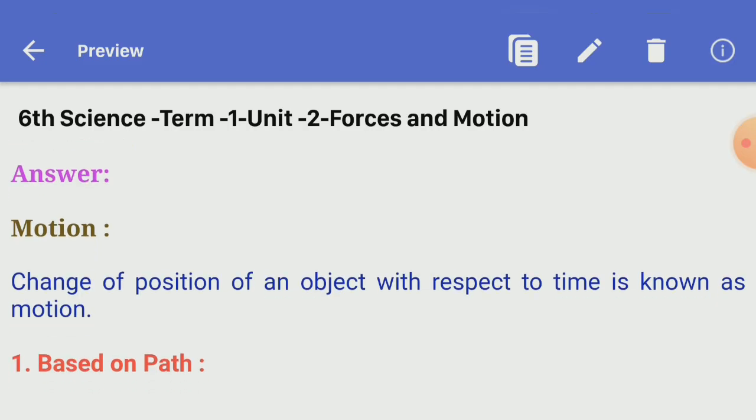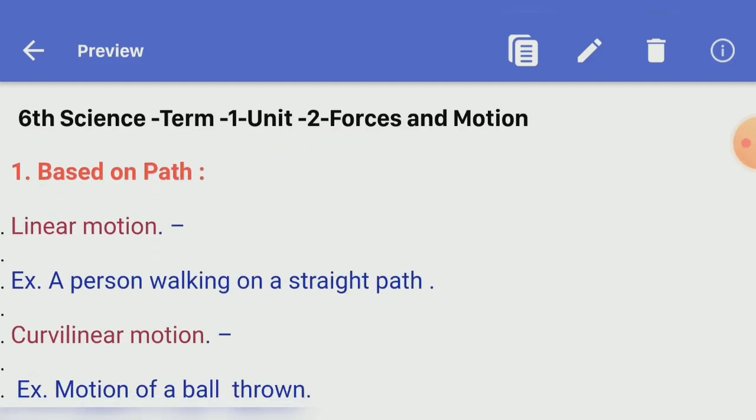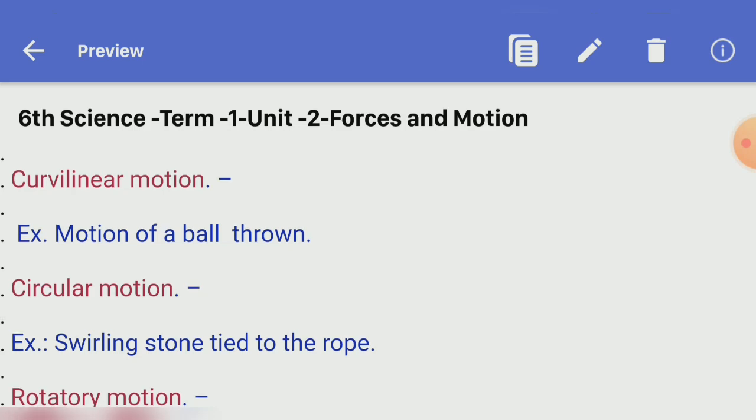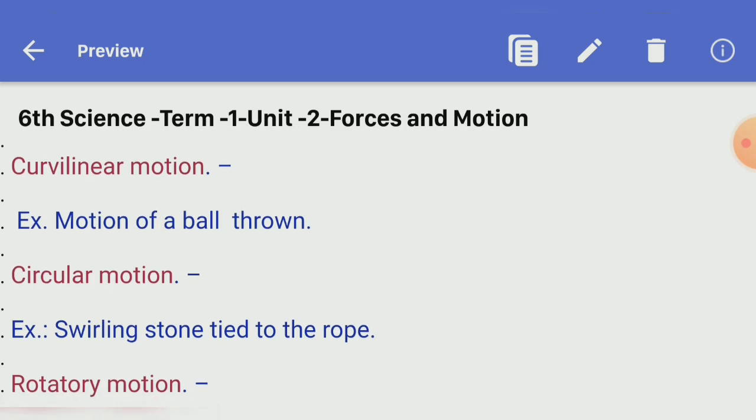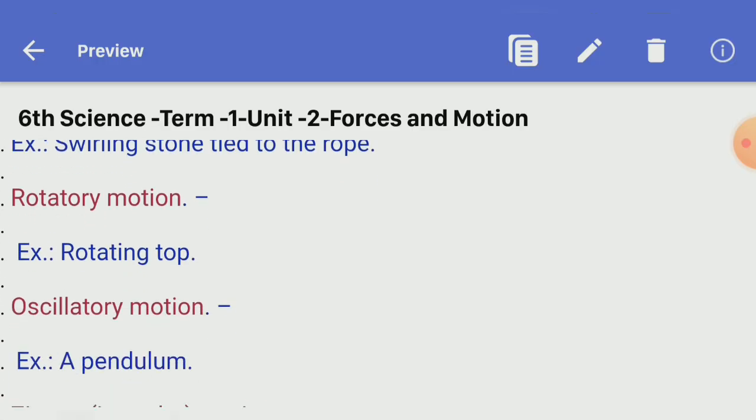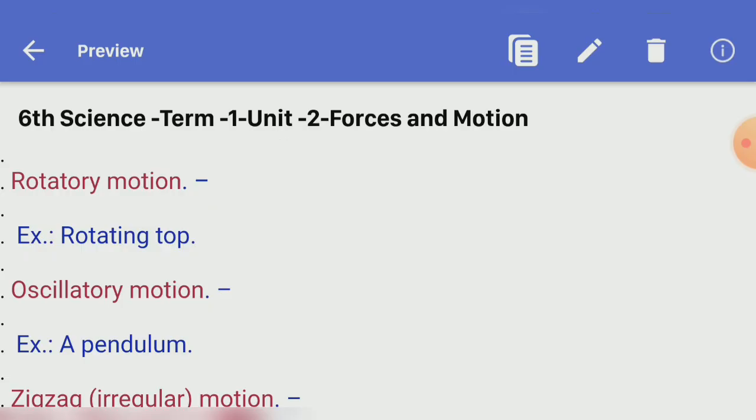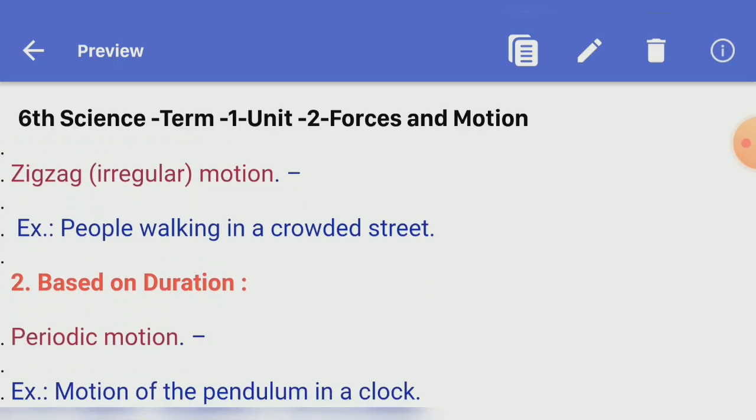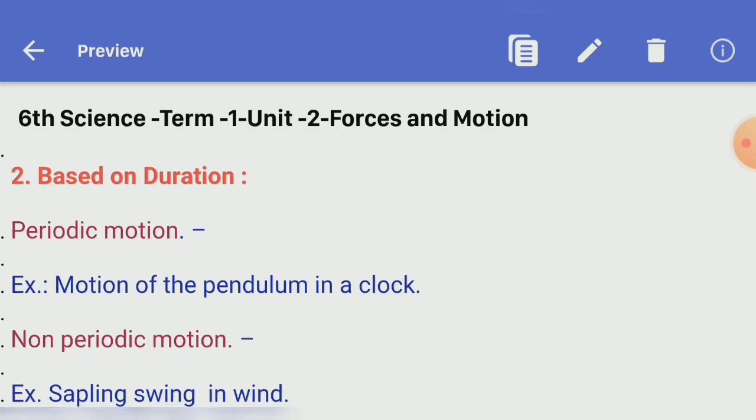Ninth Roman, answer briefly. First one: define force. Answer: force is a push or pull by an animate or inanimate agency. Second: name different types of motion based on the path. Answer: linear motion, curvilinear motion, circular motion, rotatory motion, oscillatory motion, irregular motion, zigzag motion. Third one: if you are sitting in a moving car, will you be at rest or in motion with respect to your friend sitting next to you? Answer: I am in rest with respect to my friend sitting inside the car.